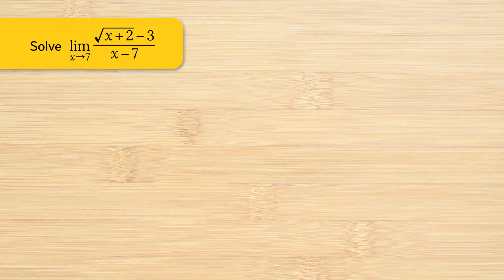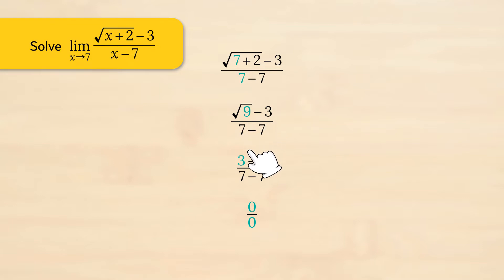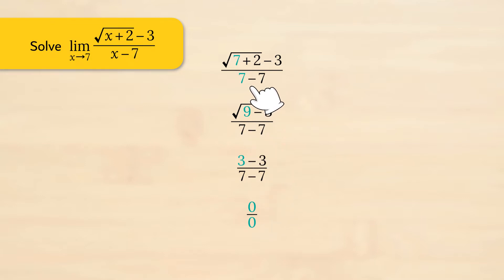Solve the limit as x approaches 7 of the function: the square root of x plus 2, minus 3, divided by x minus 7. Mentally putting in 7 for x, the square root of 7 plus 2 minus 3 divided by 7 minus 7. 7 plus 2 is 9, the square root of 9 is 3. 3 minus 3 is 0. In the denominator, 7 minus 7 is also 0.